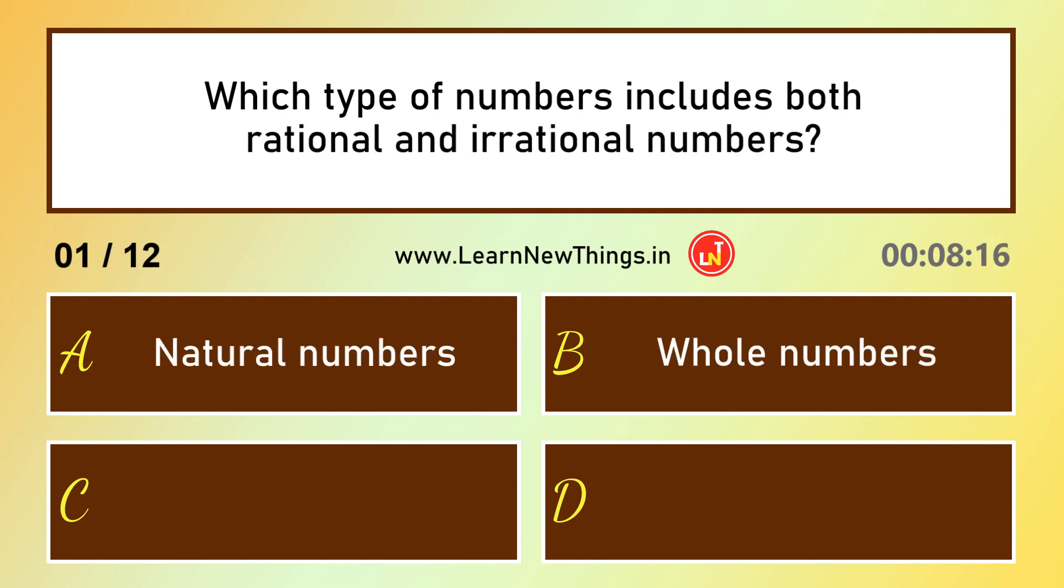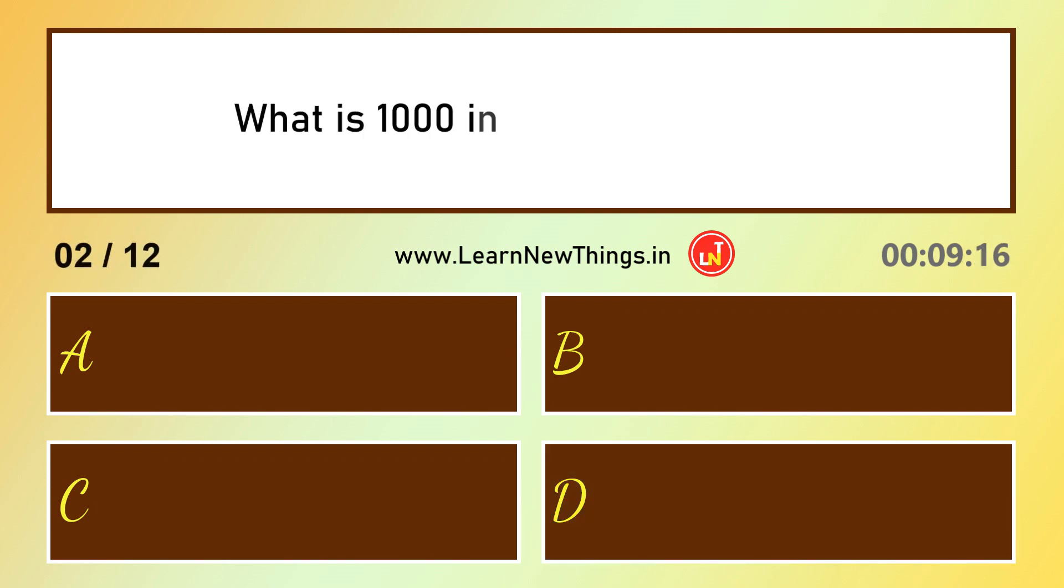Which type of numbers includes both rational and irrational numbers? Real numbers. What is thousand in Roman numerals? M.